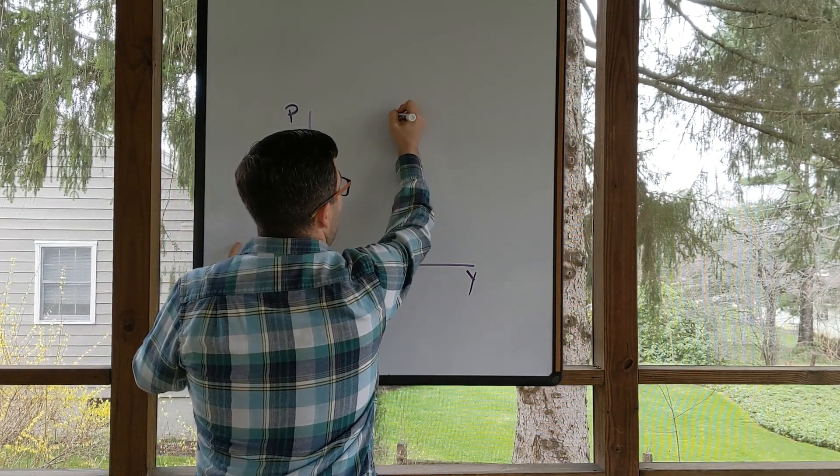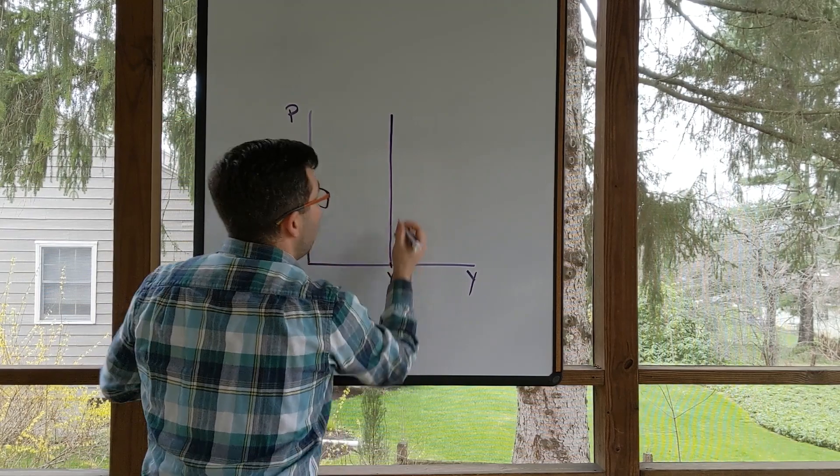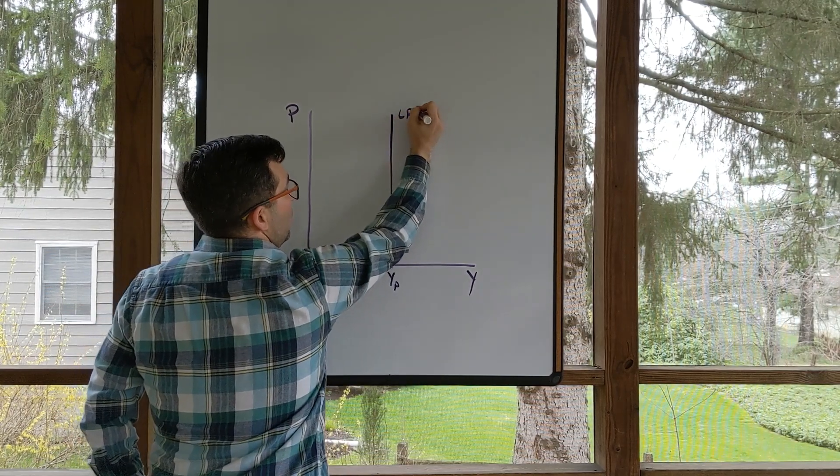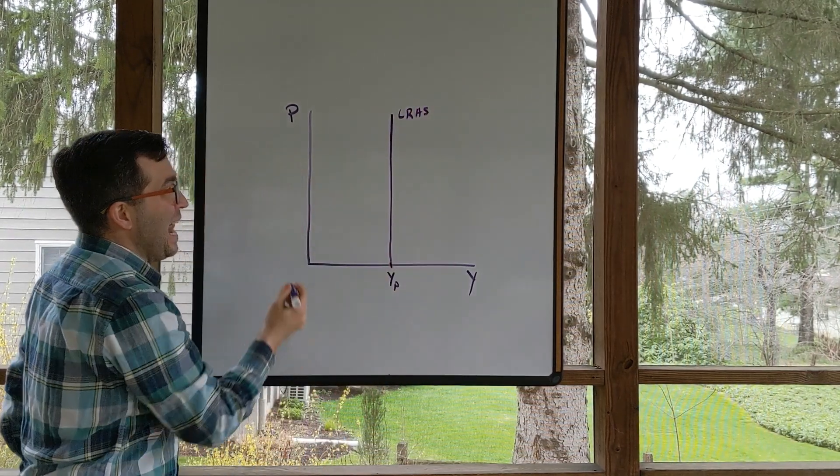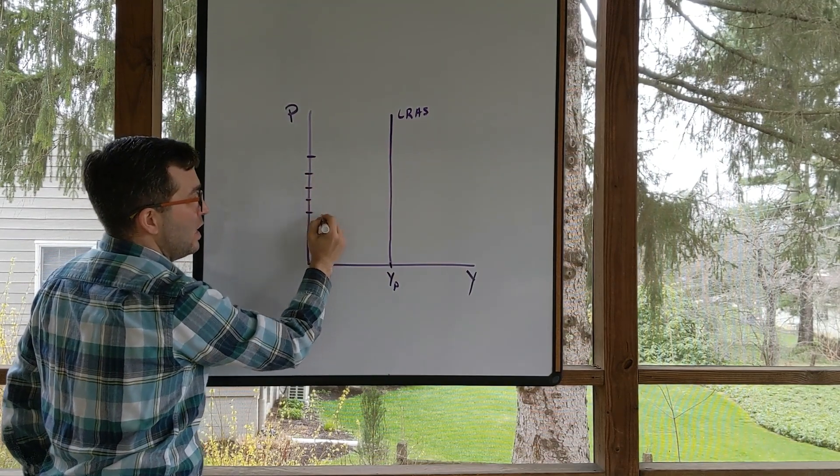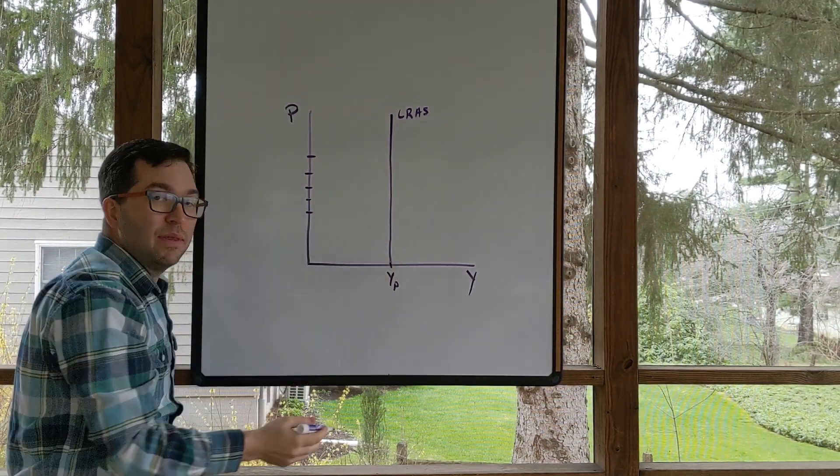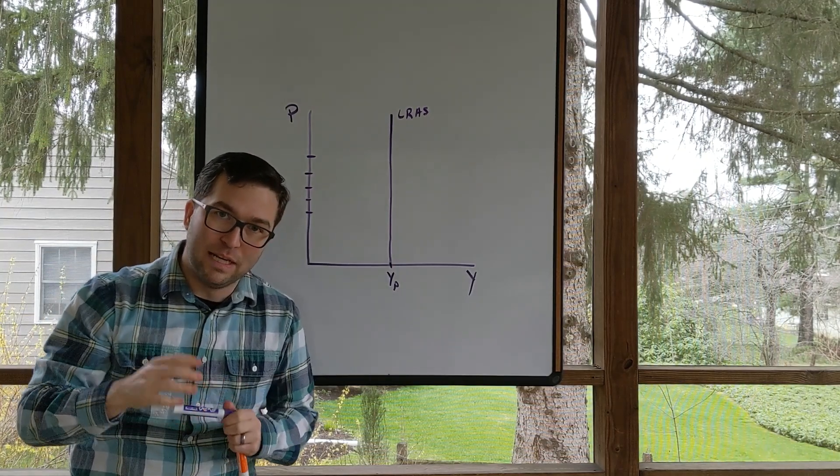That's why we say that my long run aggregate supply is vertical, meaning that any level of price—here, here, here, here, here—they are all associated with the same level of potential GDP.